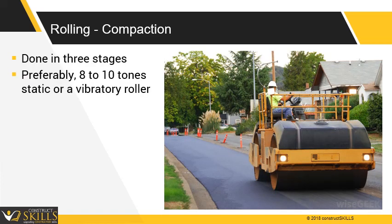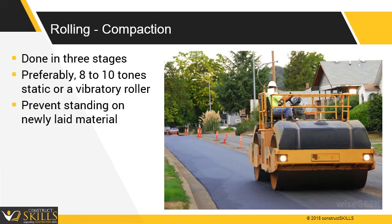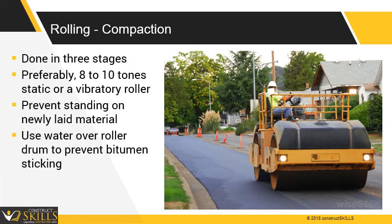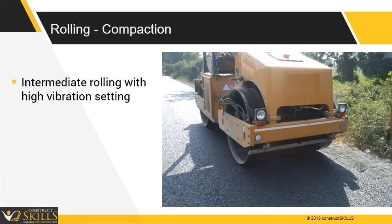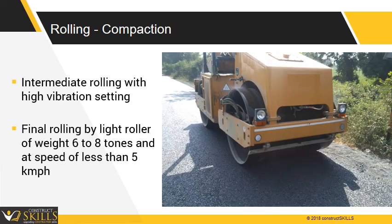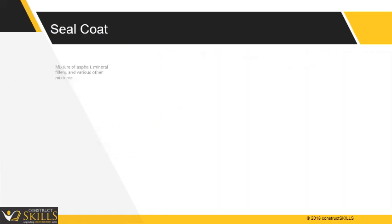Breakdown rolling uses either a heavy static roller of dead weight 8 to 10 tonnes or a vibratory roller. Prevent standing on newly laid material. Use water over the roller drum to prevent bitumen sticking. Temperature of the mixture while rolling should be 90 degrees Celsius. Intermediate rolling can be done with high vibration settings, and final rolling is done by a light roller of weight 6 to 8 tonnes at a speed of less than 5 km per hour.